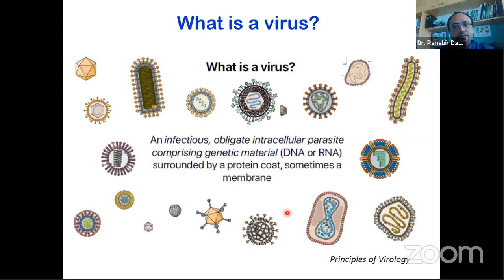If you ask what a virus is, the textbook definition says it is an infectious, obligate, intracellular parasite comprising genetic material — DNA or RNA — surrounded by a protein coat, sometimes a membrane. Essentially, there's a DNA or RNA, and there's a coating around it — that is essentially what a virus is. This virus, when the coating is present, can enter any human cell and replicate inside it.